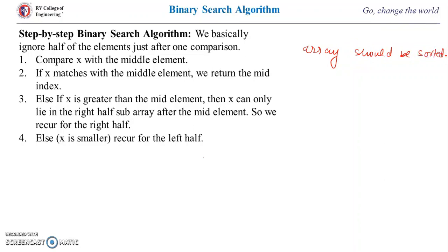First, we compare the item to be searched with the middle element of the array. If the item is found there, our search finishes successfully. Otherwise, the array is divided into two halves. The first half contains all the elements to the left of the middle element, and the right half consists of all the elements to the right of the middle element.